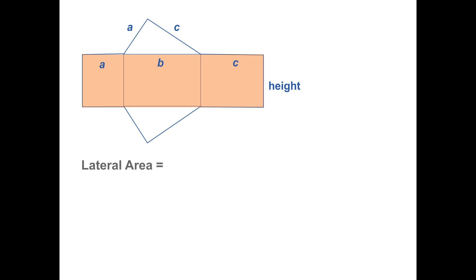So the lateral area of a right prism is the length of the rectangle — A plus B plus C — times the height. Or simply, the perimeter of the base, P, times the height of the prism, H.